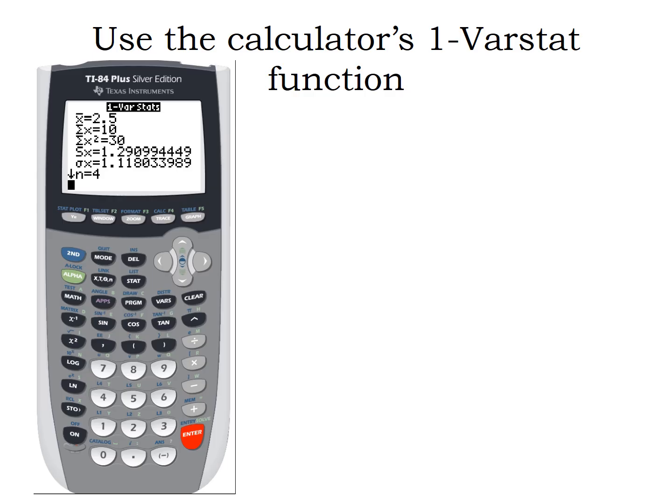So notice we've got our sample mean at the top, X̄ is 2.5. And as you scroll down, you're going to find other statistics like our quartiles. Here's Q1. And then if you scroll down more, you'll find Q2, Q3, and eventually the maximum.